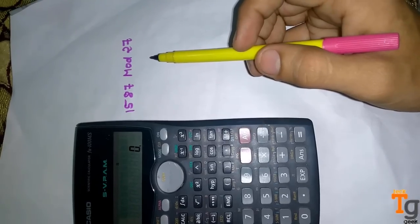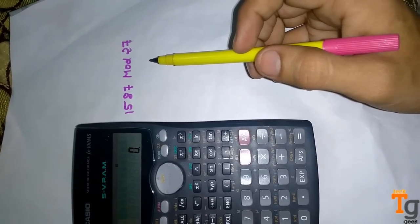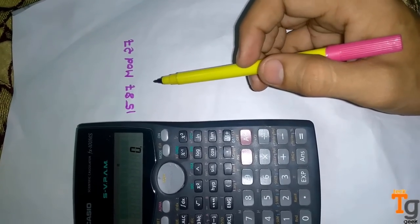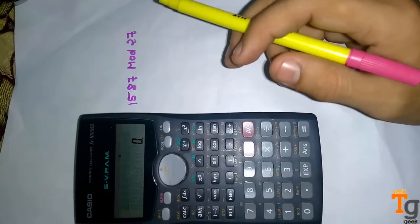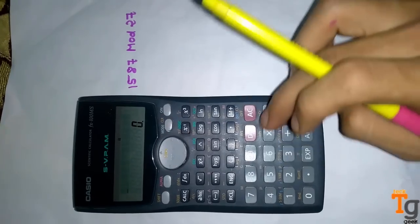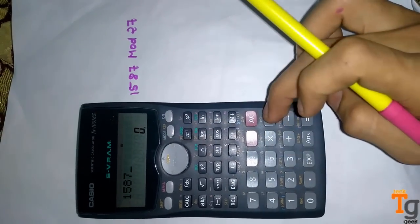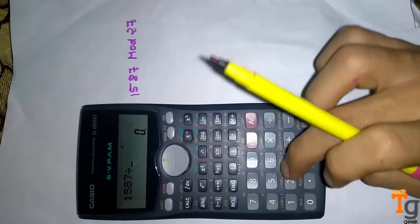So this is the problem and it is really time-consuming without a calculator. Now I am going to solve this problem with calculator. The number is 1587 and I am going to divide by 27.